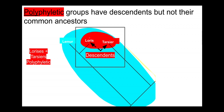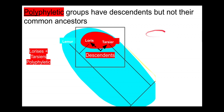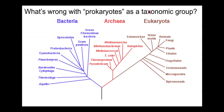Lorises and tarsiers are being grouped together by large eyes, nocturnality, and occurring in Asia — traits that happen to be convergently evolved. Lorises evolved from a common ancestor with lemurs but ended up in Asia and evolved large eyes. Tarsiers evolved from a common ancestor with monkeys and apes — they're more closely related to monkeys than to lorises — but they also ended up in Asia and evolved large eyes. These are morphological similarities due to convergent evolution, not shared evolutionary relationships.